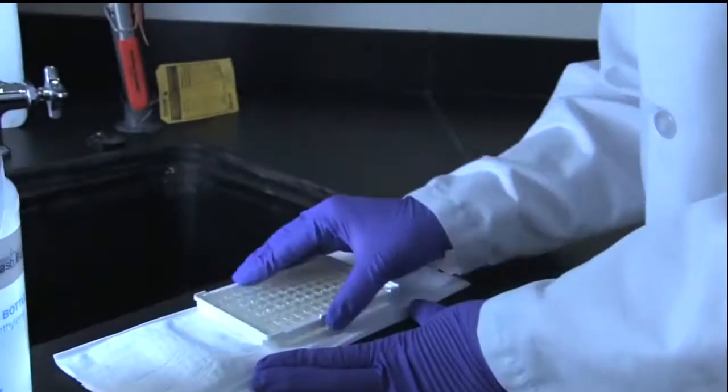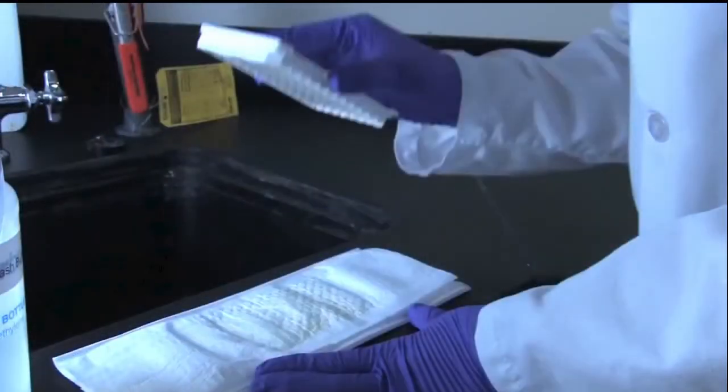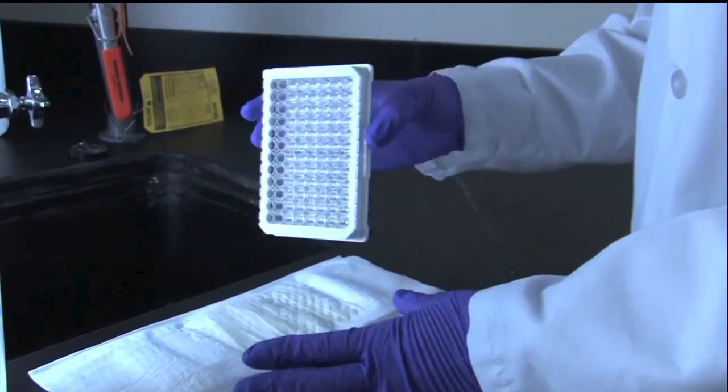Tap the inverted plate on a dry and lint-free absorbent surface, such as a Bounty paper towel, to ensure all liquid content has been removed from the wells. Blotting towels should be changed frequently.